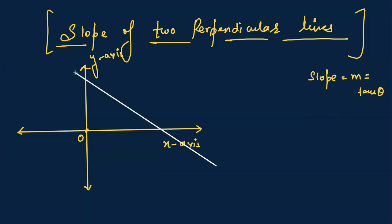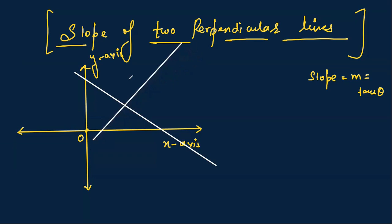Let's draw the first line on the x-y plane — this is the first line. Now, since we are talking about two perpendicular lines, I am drawing a second line. These two lines are perpendicular, meaning they make an angle of 90 degrees. This is line L1 and this is line L2.